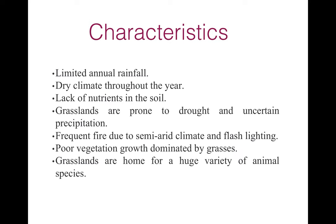The grassland ecosystem is characterized by very limited annual rainfall and a dry climate throughout the year. There may be a lack of nutrients in the soil, and grasslands are prone to drought and uncertain precipitation. One can see frequent fire due to semi-arid climate and lightning. There is poor vegetation growth dominated by grasses, and grasslands are home to a huge variety of animal species.